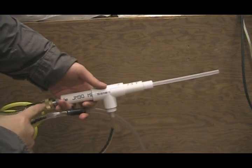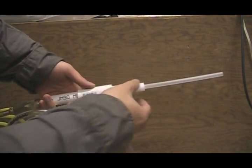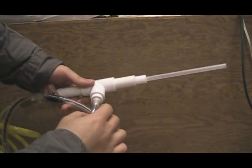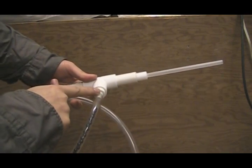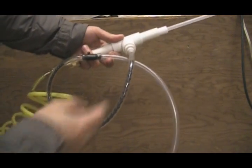This is the inlet for the air compressor. This goes through this whole T and then out here. Inside here, I have a coupler that fits the 5/16th inner diameter vinyl tubing that I have.